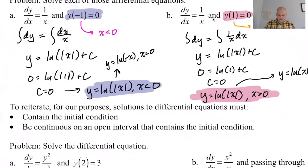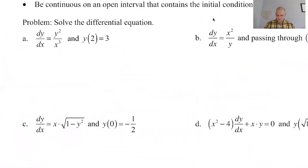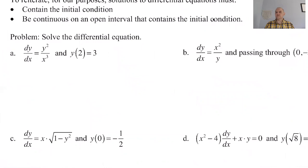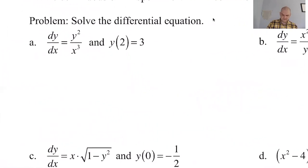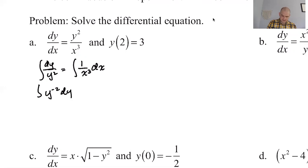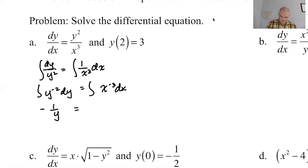Let's go ahead and solve problem (a). First I'm going to separate, so dy/y² = (1/x³)dx. I think it's easier to write this as y^(-2) dy = x^(-3) dx, then integrate. This becomes negative 1/y on the left — since the exponent becomes -1 and we take the reciprocal — and on the right we get negative (1/2)x^(-2), which I'll write as -1/(2x²), plus C.